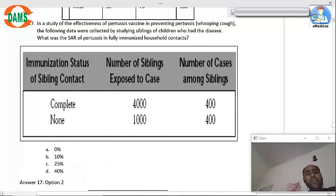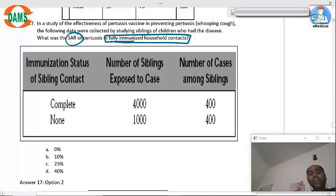Question 17: In a study of effectiveness of pertussis vaccine in preventing pertussis whooping cough, the following data were collected by studying siblings of children who are diseased. What is the secondary attack rate for fully immunized? Now see, the catch over here is the word fully immunized.